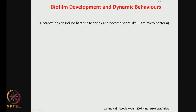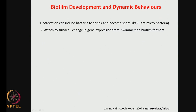Let us look at biofilm development and dynamics. What happens is bacteria, when undergoing starvation, can shrink and become spores — very small ultra-micro bacteria. They can attach to surfaces and cannot be killed by antibiotics. Once they attach, there is a change in gene expression from swimmers to biofilm formers — so there is a change in gene expression from the sassile form to the biofilm form.